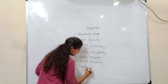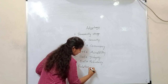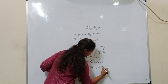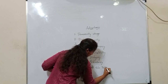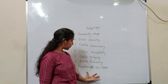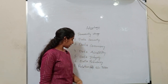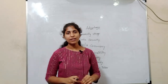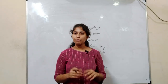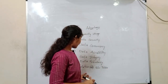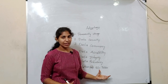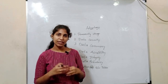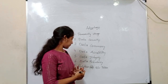The seventh advantage is relationship between tables. Relationship between tables means if we want to fetch the data at a time from two tables, the relationship between tables supports us so we can fetch data from two tables at a time.